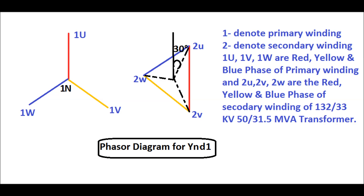1U, 1V, and 1W in capital letters are the red, yellow, and blue phases respectively of the primary winding or HV winding. Similarly, 2U, 2V, and 2W in small letters are the red, yellow, and blue phases of the secondary winding or LV winding of the power transformer.